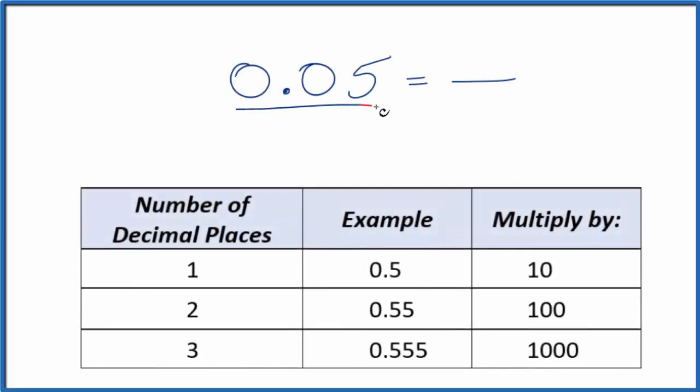Let's convert 0.05 to a fraction. And by that I mean we want to have a value that's equal but written in fraction form, numerator over denominator.